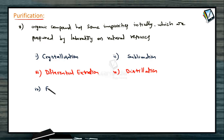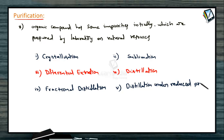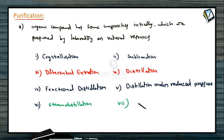Another one is fractional distillation. Distillation and fractional distillation have similar properties, but compounds having closer boiling points can be purified by fractional distillation. Another one is distillation under reduced pressure, used for organic solvents having low boiling points. The next process is steam distillation.